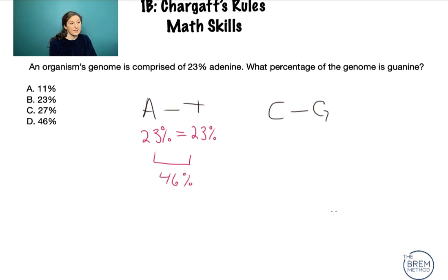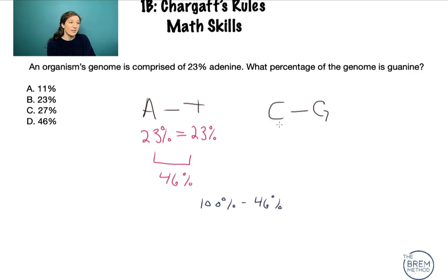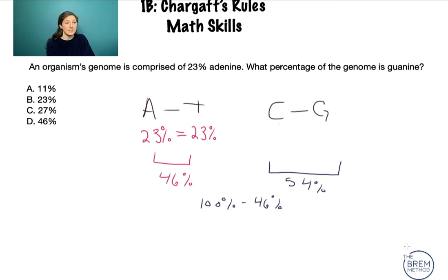There can only be 100%, so 100% minus 46% gives us the CG content — both cytosines and guanines — which is 54%. We then evenly divide this by two, because we know there are equal amounts of cytosine and guanine. So 54% divided by 2 gives us 27% for each.